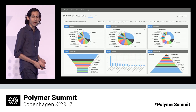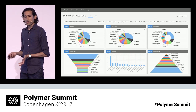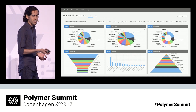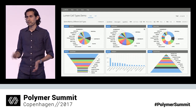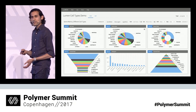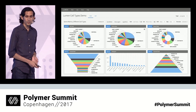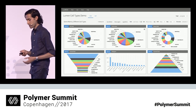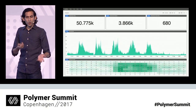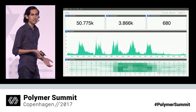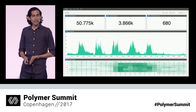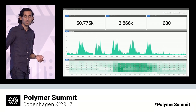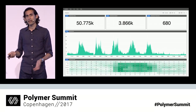Lumen also supports more than just time series data. It supports the concept of cell types — components that visualize data passed into them in different ways, such as pie charts, histograms, bubble charts, and data tables. Each of these is written as a custom element using Polymer. Users can also write custom data mappers, which are JavaScript functions that take data and convert it to a format understood by any visualization type, including data from Elasticsearch.